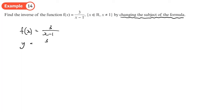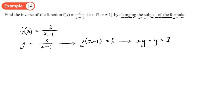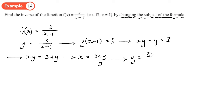For y = 3/(x - 1), multiply both sides by (x - 1) to get y(x - 1) = 3. Expand: xy - y = 3. Add y to both sides: xy = 3 + y. Divide by y: x = (3 + y)/y. Swap x and y: y = (3 + x)/x. So f⁻¹(x) = (3 + x)/x.